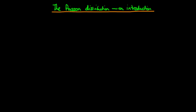In this video, I want to provide an introduction to the Poisson distribution. We're going to start off by defining the mathematical formula behind the Poisson distribution. We're then going to talk about the circumstances under which it is appropriate to use a Poisson distribution, and also provide some example situations of where it is adequate to model the situation using a Poisson distribution.